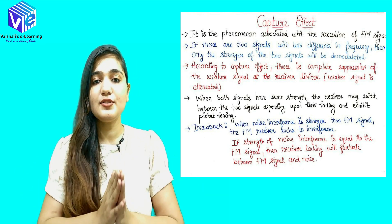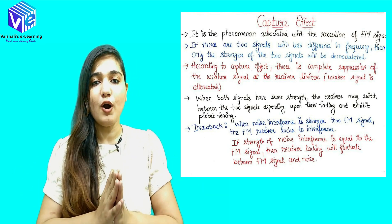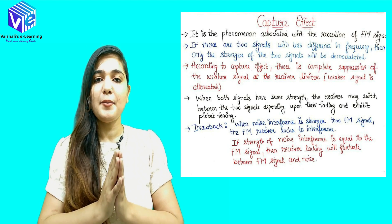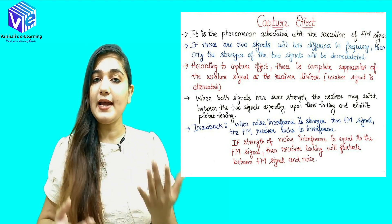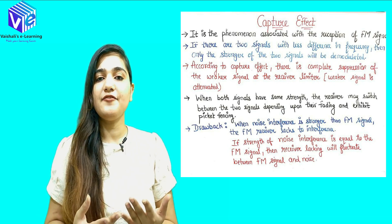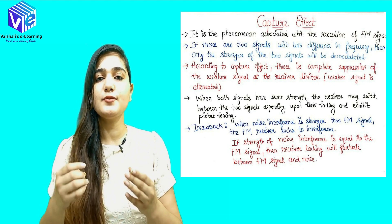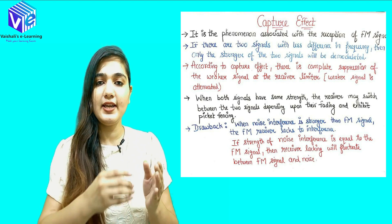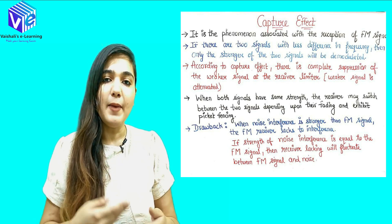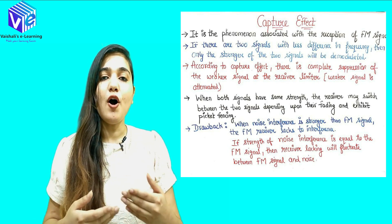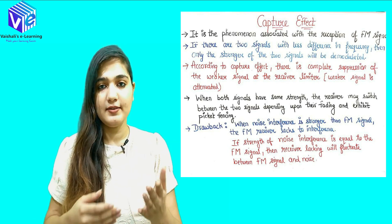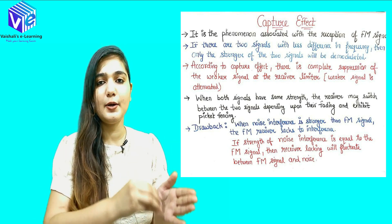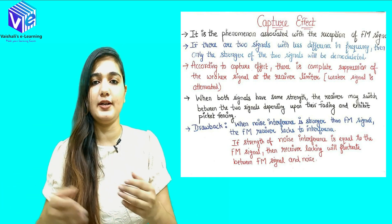This is also called picket fencing. It is called picket fencing because we are providing a boundary — the boundary is of fading. Whenever there is fading, the demodulator will fluctuate between the signals.